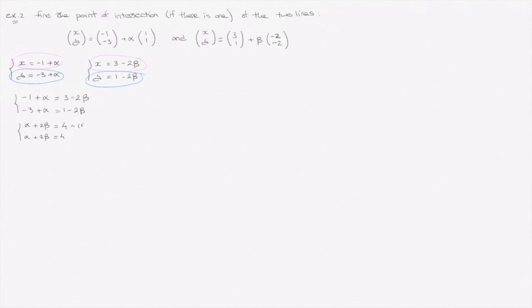If I call this equation 1 and this equation 2, my first step will be to try and eliminate, say, α inside equation 2. And so I will subtract equation 1 from equation 2. That's equation 2 becomes equation 2 minus equation 1.